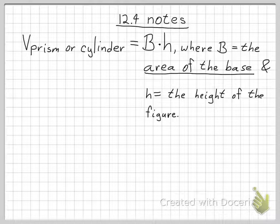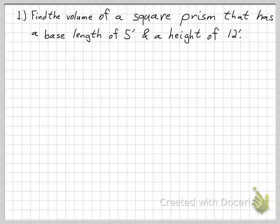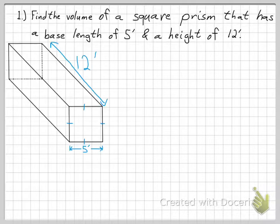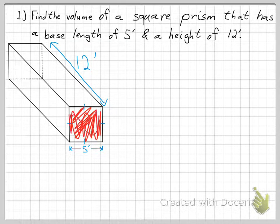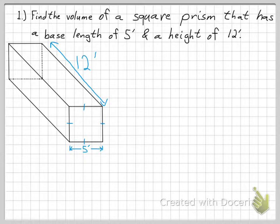So, let's work on an example here. Find the volume of a square prism that has a base length of 5 feet and a height of 12 feet. So, copy down this prompt. And we can see here that the base is a square, and then the height is 12 feet.